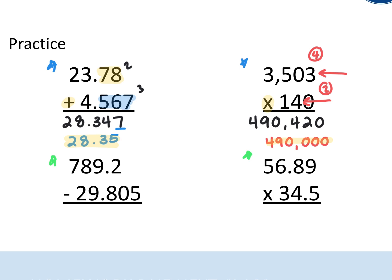Looking at the first one, I'm dealing with a subtraction. Just like before, I'll do the math. I'll do 789.2 minus 29.805. I get a final answer of 759.395. Because it is subtraction, I'm going to look for the fewest amount of decimal places. Looking at the first one, I have one decimal place, whereas the second one I have three decimal places.